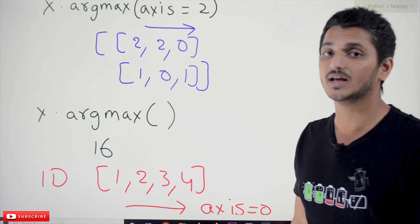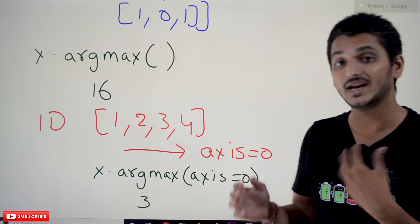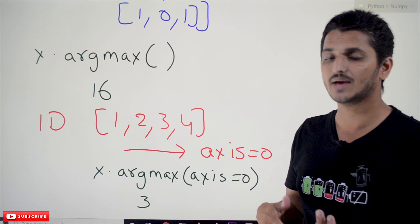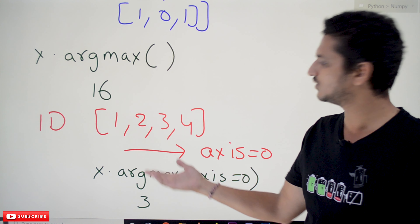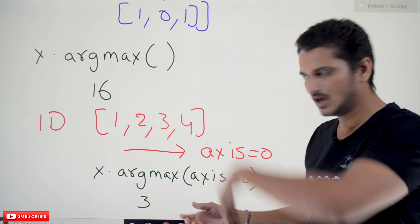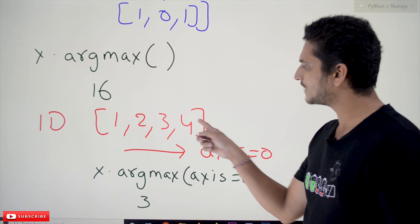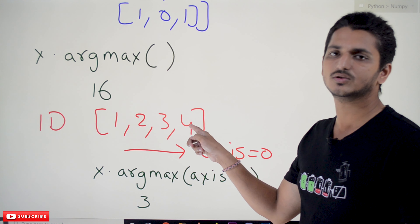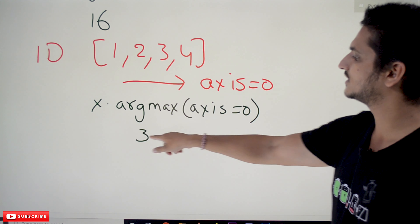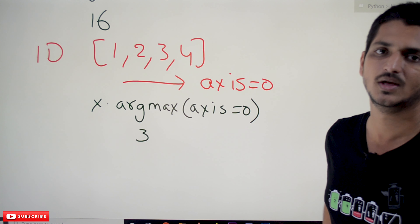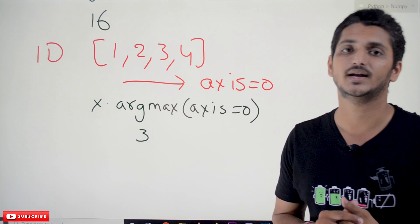Coming to the one-dimensional array, we are having only one axis: axis=0. Don't get confused with the two-dimensional behavior. In two dimensions axis=0 works column-wise, but in one dimension we don't have that extra dimension, so axis=0 works along the only existing direction. For [1, 2, 3, 4], the maximum value is 4 at index 3. The output is 3. That is how axis works — this is very, very important to understand.